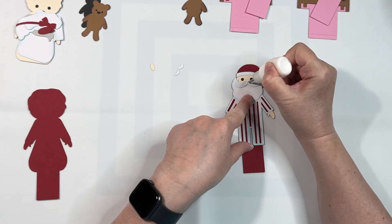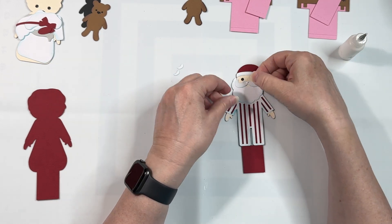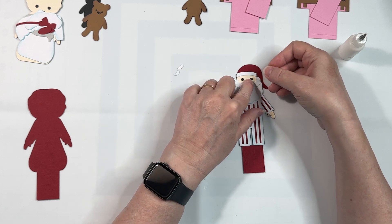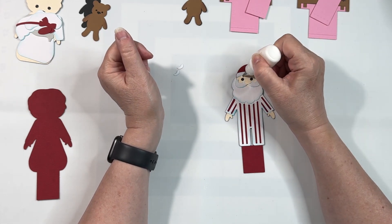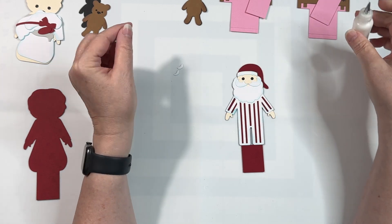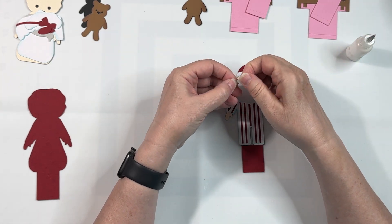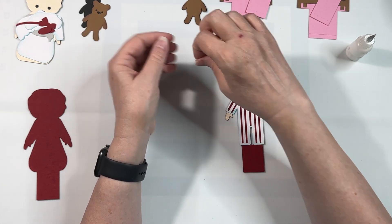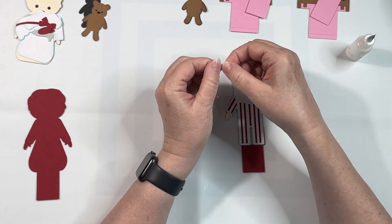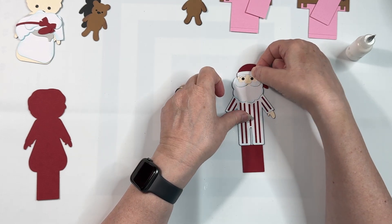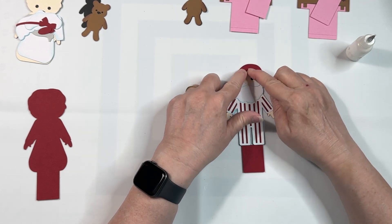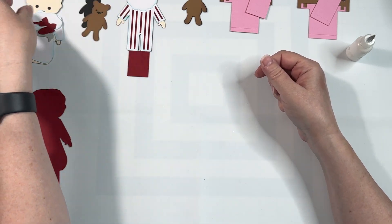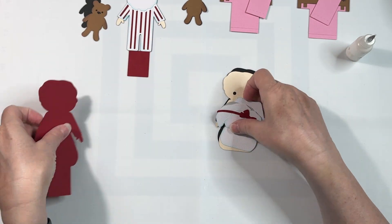And then we're going to put on his nose and he does have eyebrows put two dots of glue here and add his eyebrows so there is a Santa and now let's assemble Mrs. Claus.